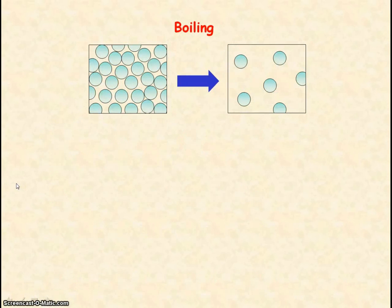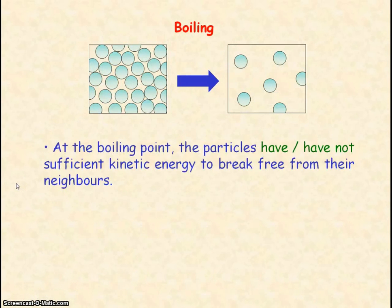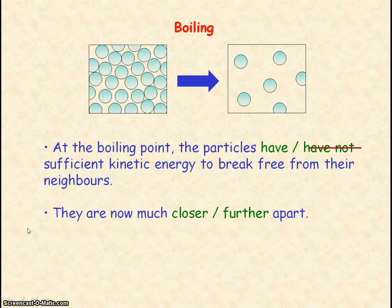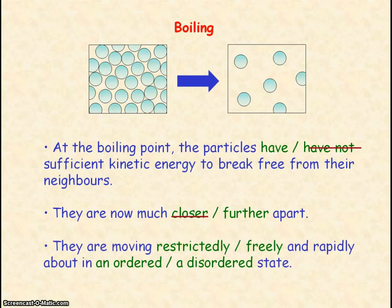For a liquid to boil into a gas, the particles need to have enough kinetic energy to break free from their neighbours. So the particles become much further apart and they move freely and rapidly but in a disordered state, so they are in the gas phase.